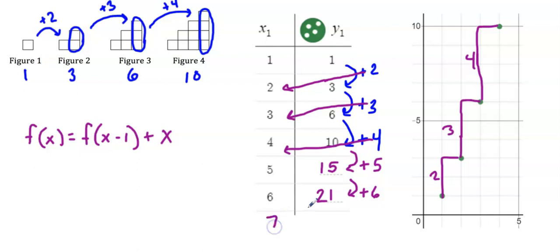To get to the seventh term, I'll have to take the previous value of 21, and I need to add seven to get to 28. The last thing I need to make sure I include with my recursive rule is where I started, so I'll put a comma, and then f(1) = 1. So I have my recursive rule.